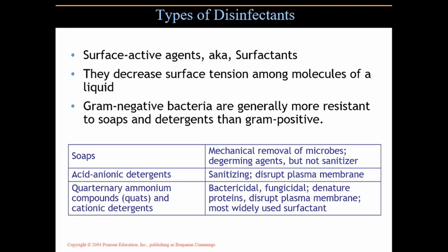Surface active agents, or surfactants — soap is classified as one of these. They decrease surface tension among molecules. Gram-negative bacteria are generally more resistant to soaps and detergents than gram-positive, because of their complex outer membrane. How do soaps work? It's mechanical removal of microbes — they're de-germing agents, not sanitizers, so they're not killing them. Soaps package up dirt that carries bacteria into bubbles, and then when you rinse your hands, the water carries all of that off and sends it down the drain.